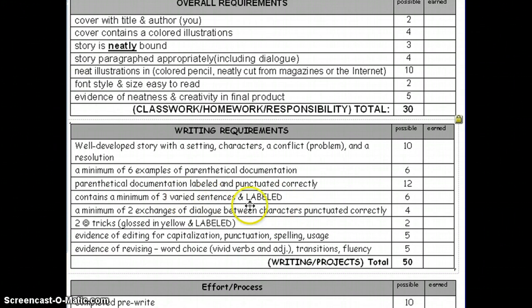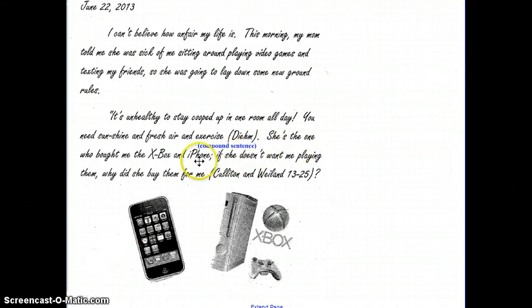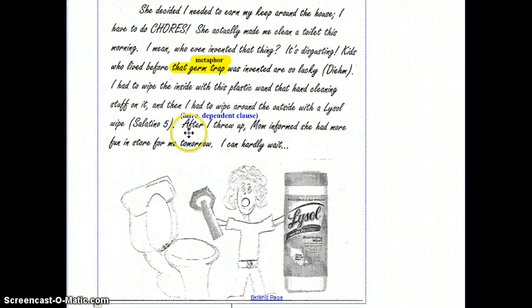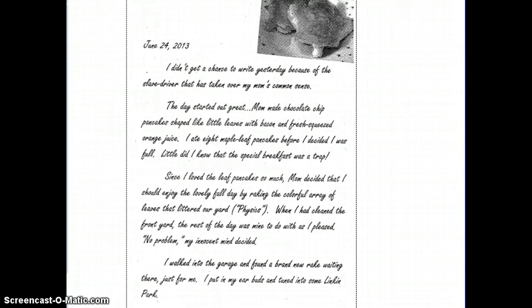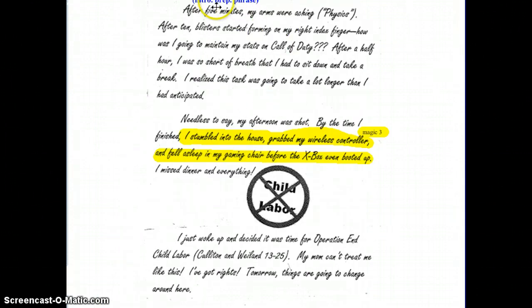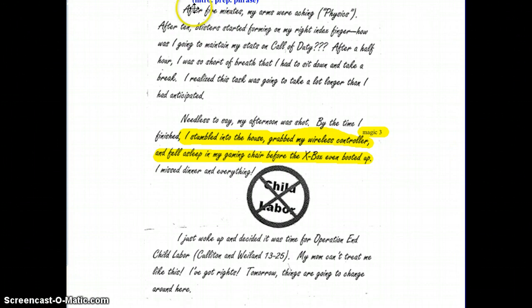There also needs to be a minimum of three varied sentences that are labeled — that's the other thing we've been talking about in grammar. In my example, they're labeled in blue. This one is a compound sentence because there's a semicolon. Here's another one with a dependent clause — it starts with a subordinating conjunction, has a subject and a verb after it. And there's a third one that's an introductory prepositional phrase. Students need to have three different labeled sentences within their story that match the varied sentence types we've talked about in class. Hopefully there will be more than three, since varied sentences make writing more descriptive and fluent, but only three have to actually be labeled.